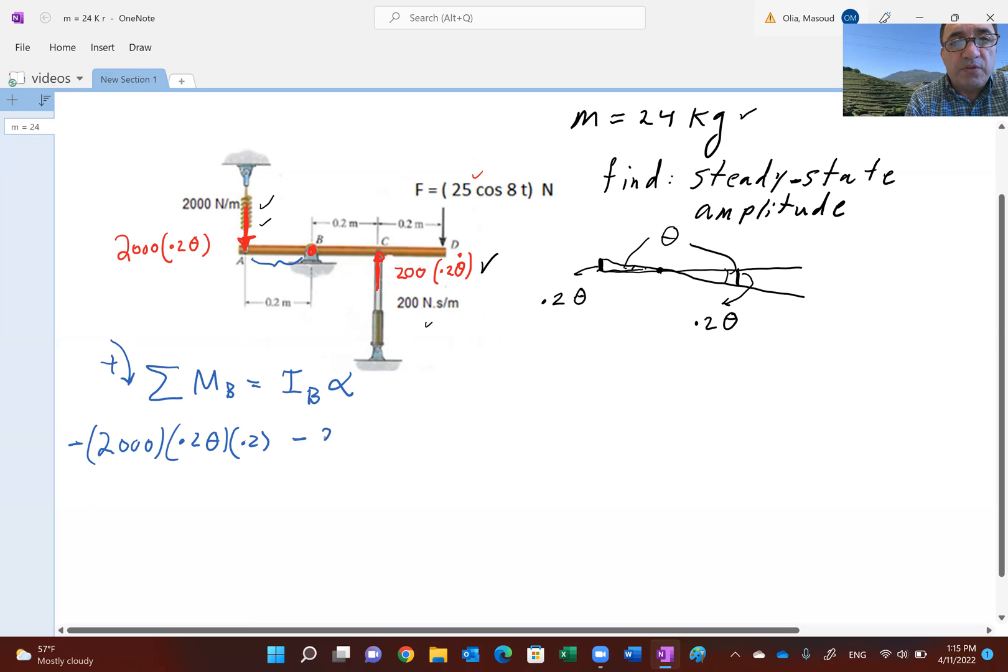Similarly, the force of the damper is going to be negative. This is the force times another 0.2 times this distance. Don't forget the force causing this disturbance, the harmonic force, which is 25 cosine 8t times 0.4. This equals I sub B times alpha.